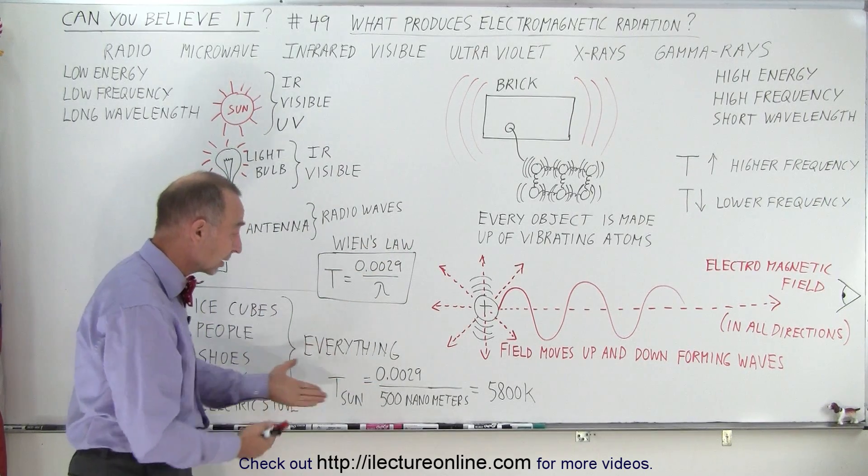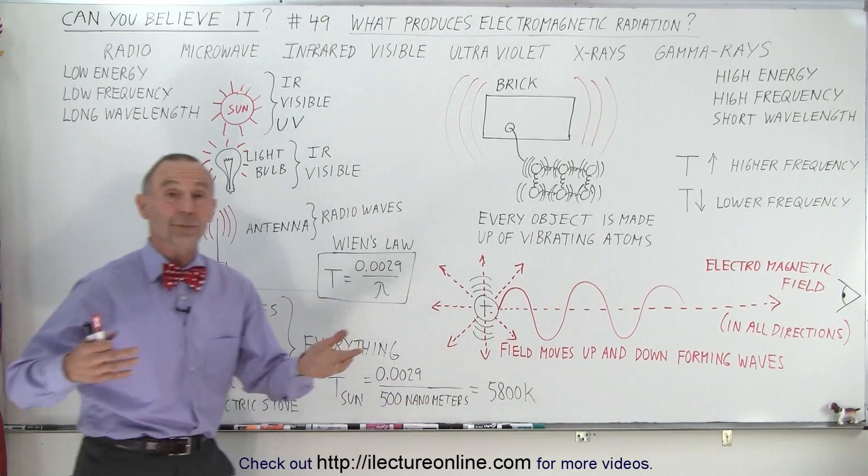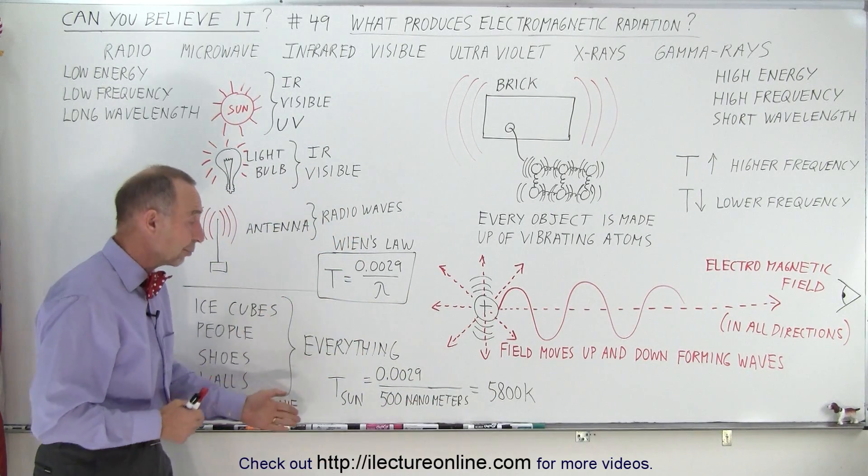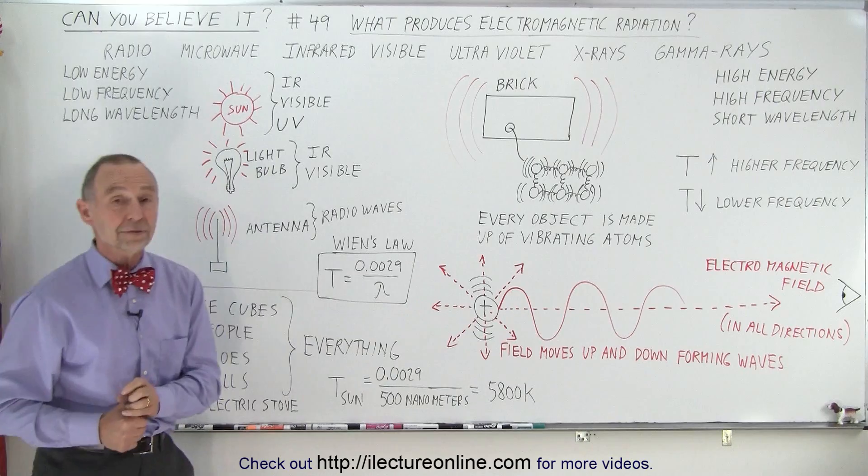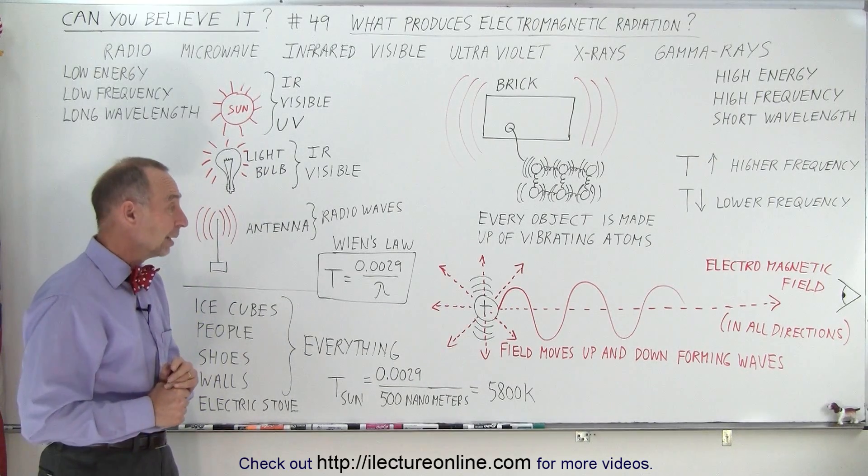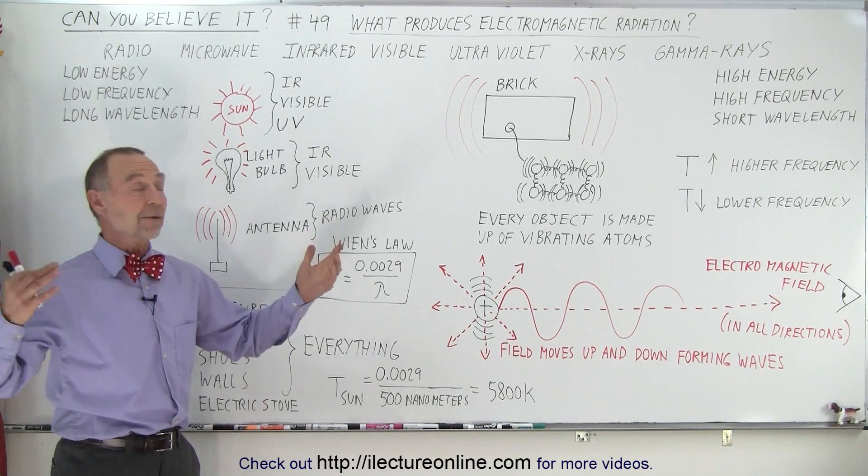And so it turns out, when we do the calculation, we can then determine that the surface of the sun has a temperature of about 5,800 Kelvin. Quite hot, by the way.